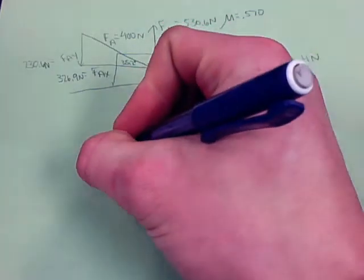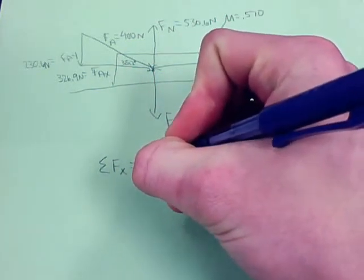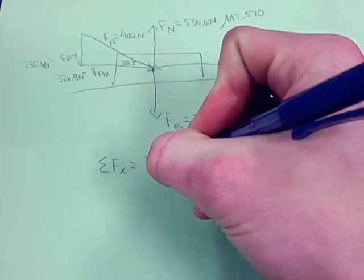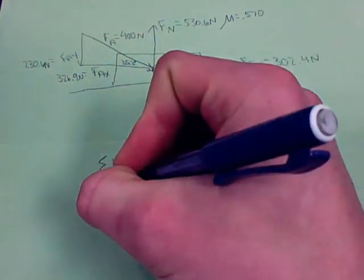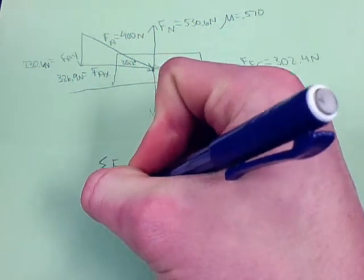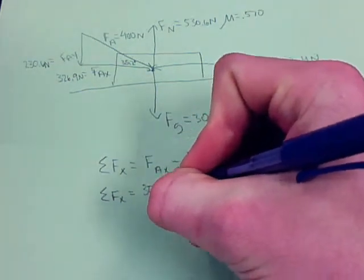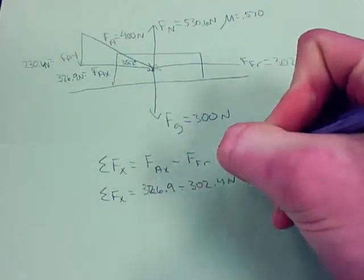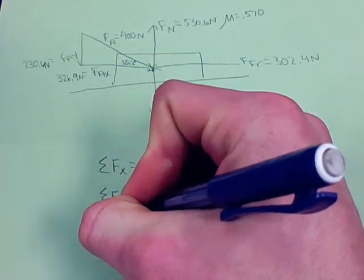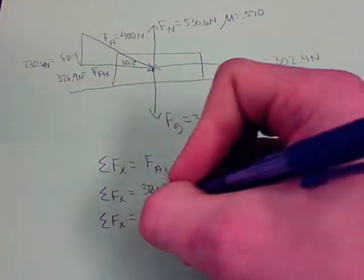So now we're going to find our sum of forces in the x direction. So our letter equation is sum of forces in the x direction equals Fax minus Ffr. And we know our Fax and Ffr, so we can do sum of forces in the x equals 326.9 minus 302.4. And the answer to that is 24.5 newtons.